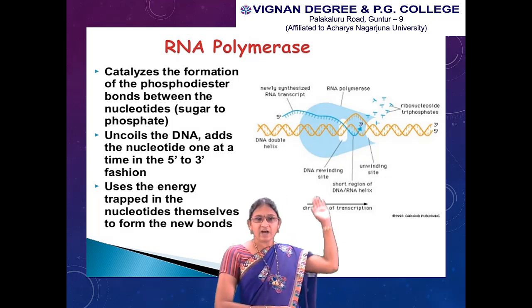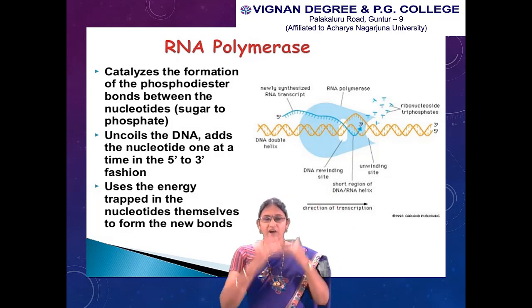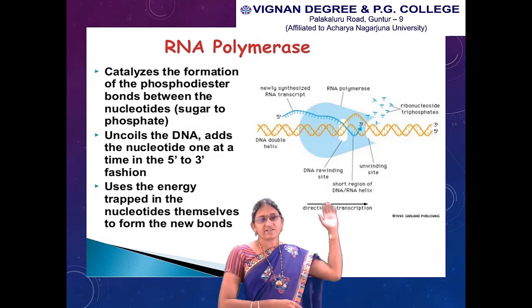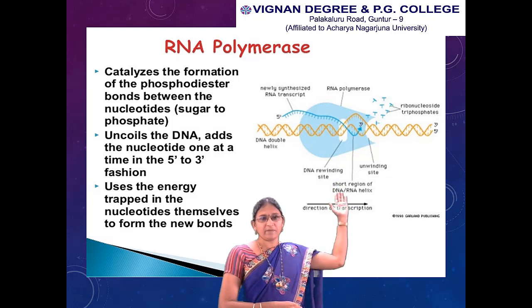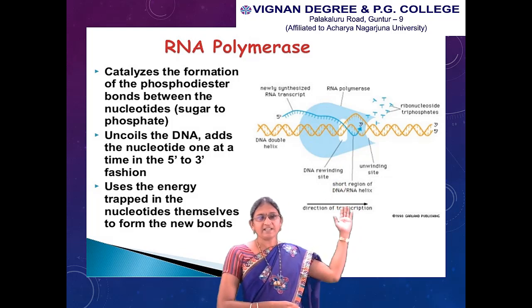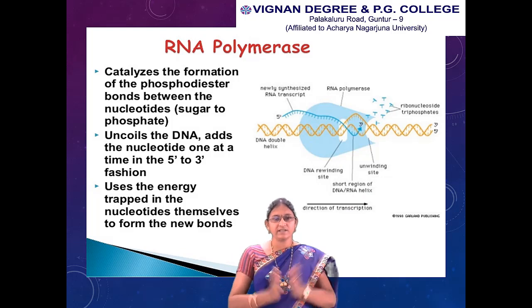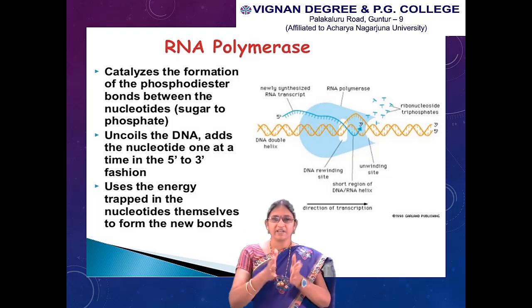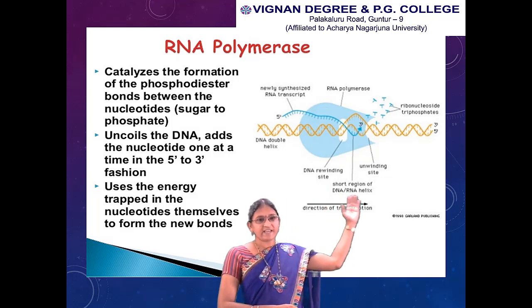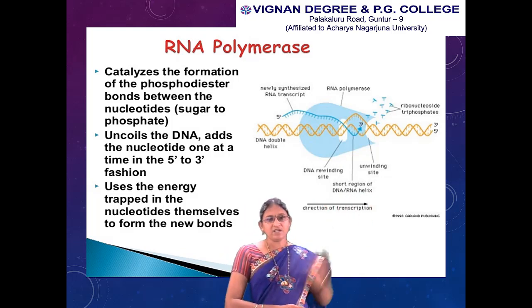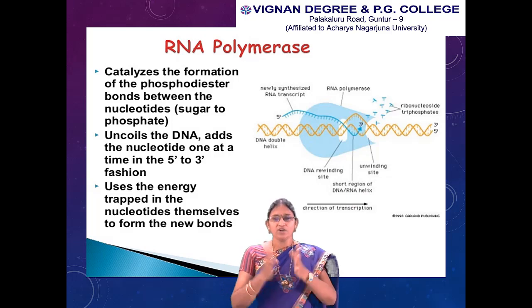RNA polymerase also uncoils the DNA. To synthesize RNA on the DNA, the DNA strands must be uncoiled, and this is achieved by RNA polymerase. It adds nucleotides one at a time, polymerizing the reaction in a 5' to 3' fashion, and uses the energy trapped in the nucleotides themselves to form new bonds.